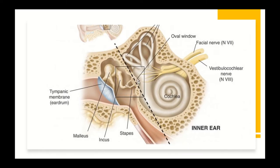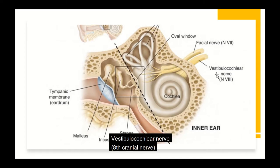The vestibular part includes the bony vestibule and the semicircular canals, concerned with balance regulation. Oscillations transmitted through the stapes into the inner ear are converted into electrical signals inside the cochlea, then transmitted through the cochlear part of the vestibulocochlear nerve — the eighth cranial nerve — to the brain. The vestibulocochlear nerve has two components: the cochlear part, carrying sound signals, and the vestibular part, carrying balance information.